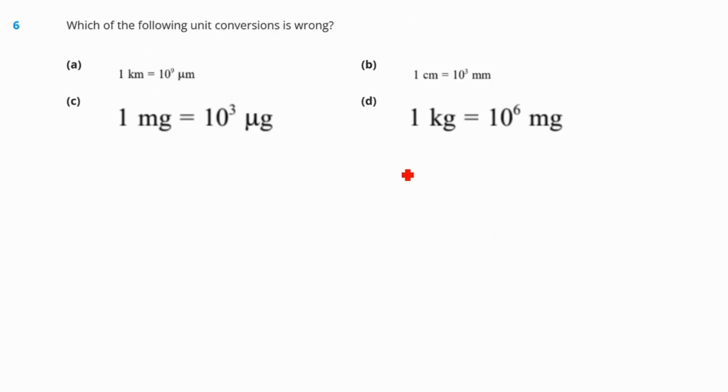Question number 6. Which of the following unit conversion is wrong? 1 kilometer is 10 to the power 9 micrometer. Correct? 1 centimeter is equal to 10 to the power 3. No. This is wrong. So our correct answer is option number B.